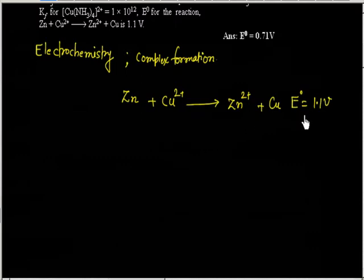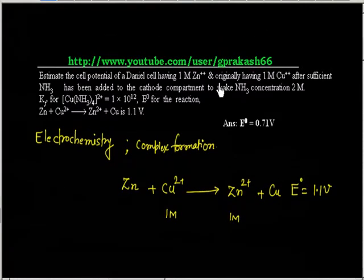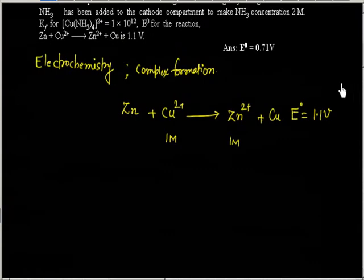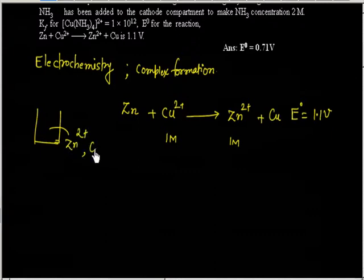Since this is E° standard, both concentrations are 1M. The question says sufficient amount of NH₃ is added to make the final concentration of NH₃ equal to 2M. This NH₃ has been added only to the copper cathodic compartment, that is the Cu²⁺ compartment.